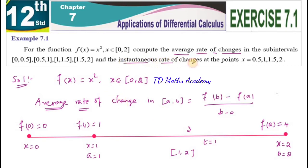Now, instantaneous rate of change at the points x equal to 0.5, x equal to 1, x equal to 1.5, and x equal to 2. For example, the speed at a particular second — say the fourth second — that is the instantaneous rate at that point. That is instantaneous speed.